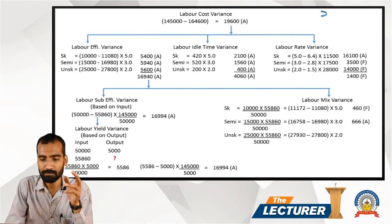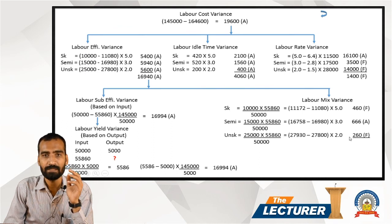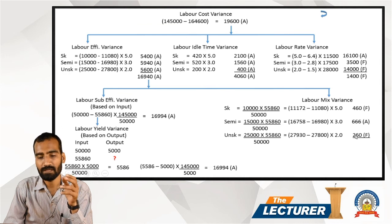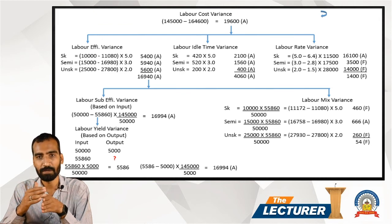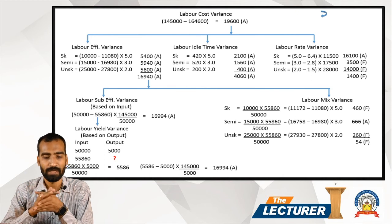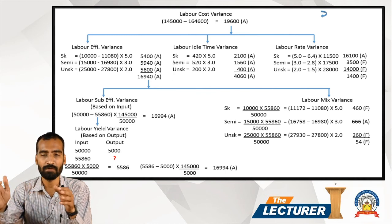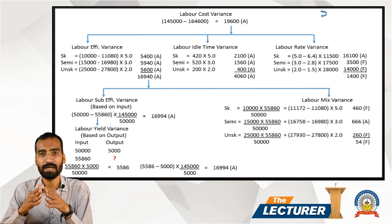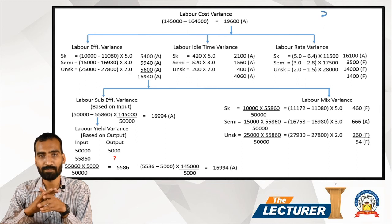Total Labor Mixed Variance = 460 Favorable − 666 Adverse + 260 Favorable = 54 Favorable. Labor Sub-Efficiency Variance + Labor Yield Variance + Labor Mixed Variance together reconcile to the total Labor Efficiency Variance of 16,940 Adverse. This completes the full labor cost variance analysis.